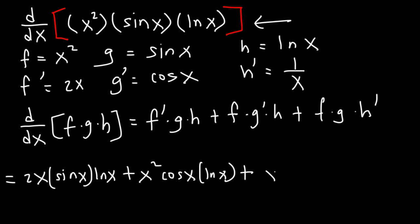And then we have f times g times h prime, which is 1 over x. Now this is our answer, but we can simplify it a bit.